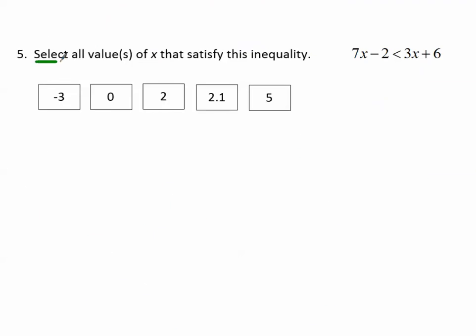Number five, select all values of x that satisfy this inequality. 7x minus 2 is less than 3x plus 6. So we could, one at a time, plug these numbers in and see if it's true. Satisfy means makes the inequality true. This is one of our key words that we want to make sure we notice in this unit. We're going to see it quite frequently. So we could plug each of these solutions in and see if they satisfy, or we could solve this inequality.